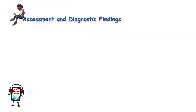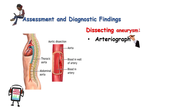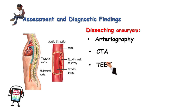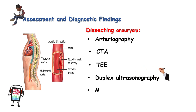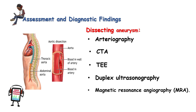Assessment and diagnostic findings for dissecting aneurysm include arteriography, computed tomography arteriography, transesophageal echocardiography, duplex ultrasonography, and magnetic resonance angiography. For further details on these different examinations, further reading is suggested.